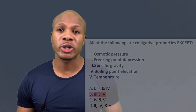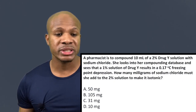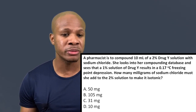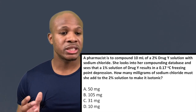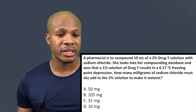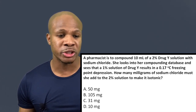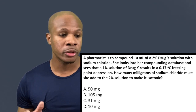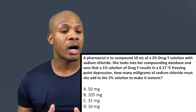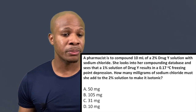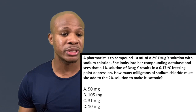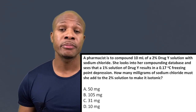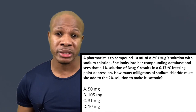Question two states: a pharmacist is compounding 10 milliliters of a 2% drug Y solution with sodium chloride. She looks into her compounding database and sees that a 1% solution of drug Y results in a 0.17 degrees Celsius freezing point depression. How many milligrams of sodium chloride must she add to the 2% solution to make it isotonic? This question requires some background knowledge.